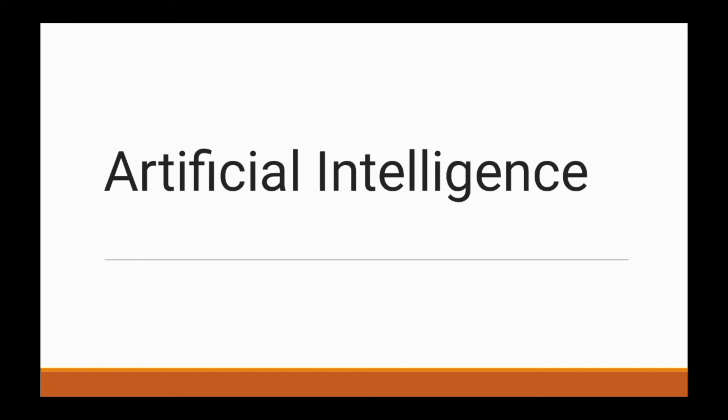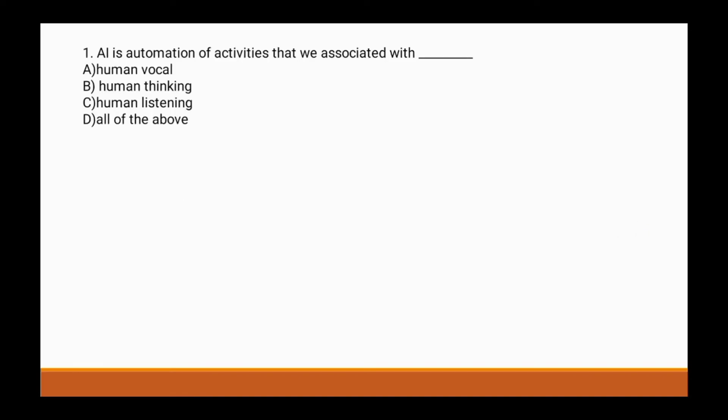First question: AI is the automation of activities that we associate with dash. Options are: a) human vocal, b) human thinking, c) human listening, d) all of the above. The correct answer is b) human thinking.